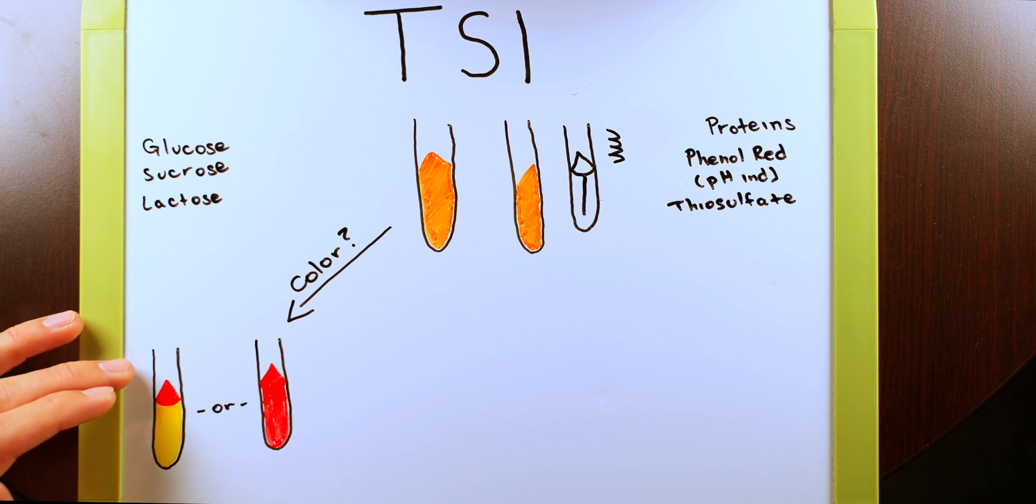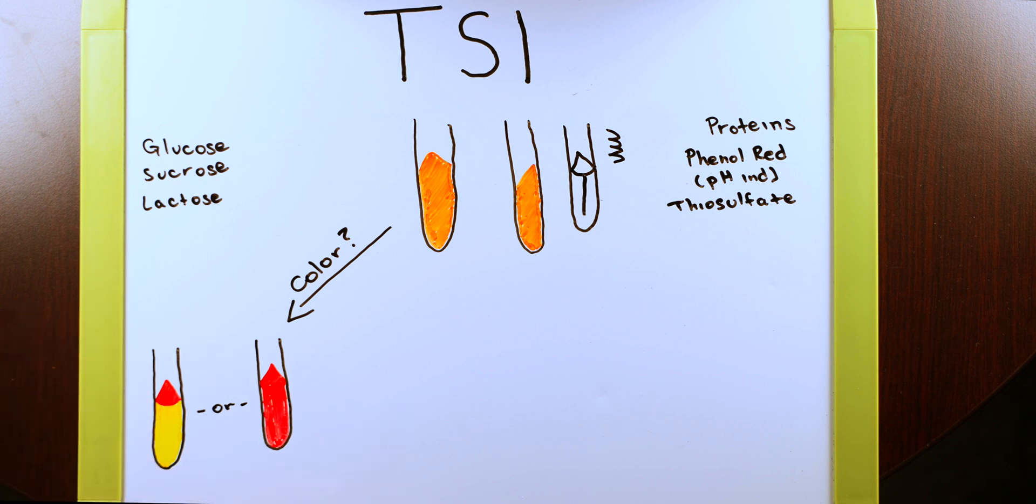Whereas the red indicates that we have alkaline end products, which is an end product of protein metabolism, which leads us right into our completely red test tube. This one tells us that we were able to use the proteins as an energy resource for the bacteria. But because there's no yellow here, this doesn't give us an indication that any of the sugars were used. A good question that you're going to want to have ready for your lab practical is how come we don't have a completely yellow test tube as a possible result for this. And feel free to answer that question down in the comment section below.